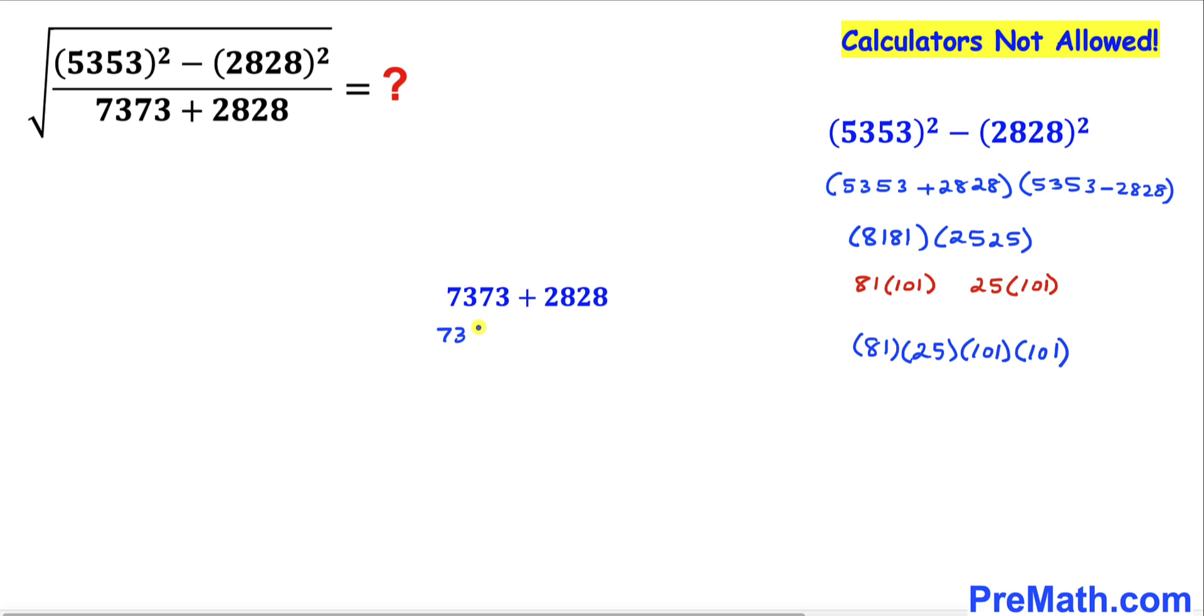We can see 101 is in common. We can factor 101 outside, and we are left with 73 plus 28.